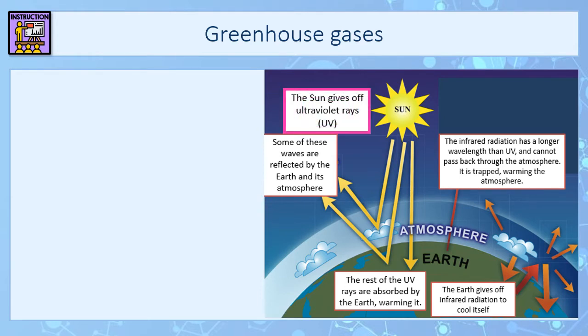The sun gives off ultraviolet rays — UV radiation — and that comes to the earth. When that UV radiation hits the earth, some of it is reflected and bounces back through the atmosphere, and the rest is absorbed by the earth. When the earth absorbs that radiation it warms up, then gives off infrared radiation to cool itself. Because infrared radiation has a longer wavelength than UV, it cannot all pass back through the atmosphere and gets trapped, warming the atmosphere.